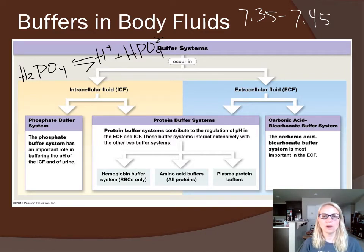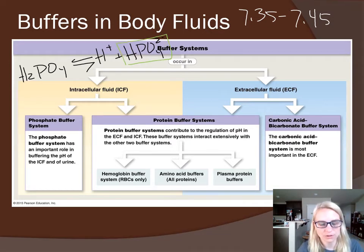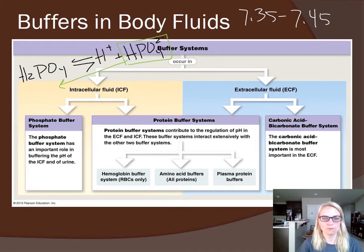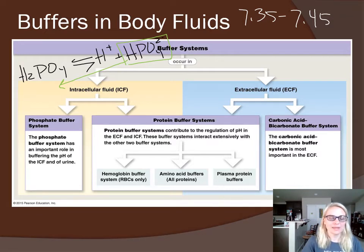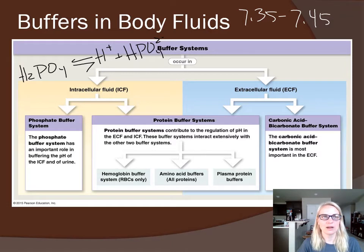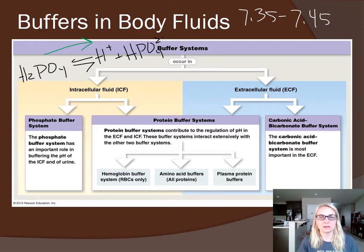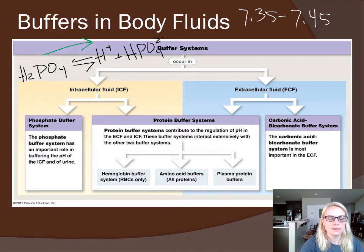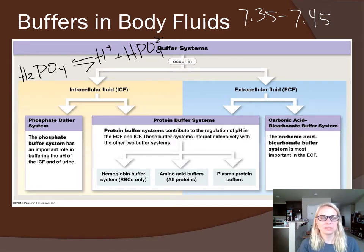In an acidic environment with high hydrogen ion concentration, the HPO₄²⁻ (monohydrogen phosphate) ties up excess hydrogens to produce H₂PO₄⁻. In a basic environment with too few hydrogen ions, the H₂PO₄⁻ splits apart to release hydrogen ions into solution, bringing the pH back down to normal. This equation works in both directions and is the main buffer inside cells, maintaining the pH of the cytoplasm.